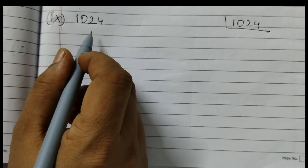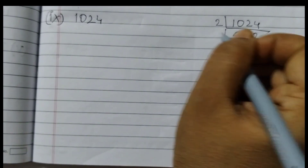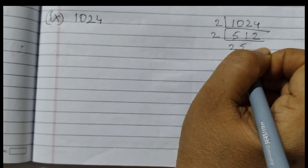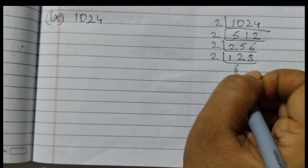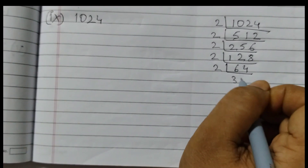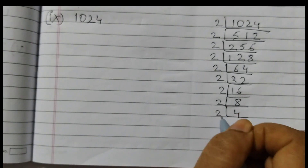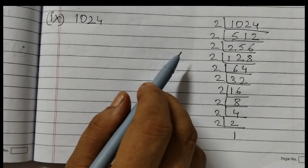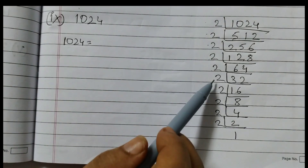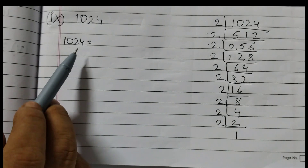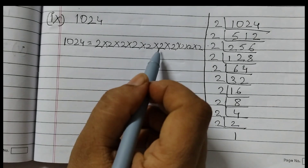Next number is 1024 — again a big number. Let's start with 2: 1024 ÷ 2 = 512, 512 ÷ 2 = 256, 256 ÷ 2 = 128, 128 ÷ 2 = 64, 64 ÷ 2 = 32, 32 ÷ 2 = 16, 16 ÷ 2 = 8, 8 ÷ 2 = 4, 4 ÷ 2 = 2, 2 ÷ 2 = 1. If you practice well, you can also do this very quickly. So how many 2's are there? 1, 2, 3, 4, 5, 6, 7, 8, 9, 10. Just write all the 2's and that will be your answer.